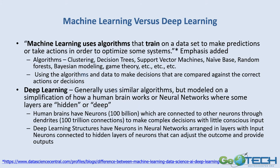Machine learning uses algorithms that train on data sets to make predictions or take actions in order to optimize some system. These algorithms can be many different things — clustering, decision trees, random forests, Bayesian modeling, game theory, and so on. Using these algorithms and data, decisions are made that are then compared against a correct action or decision.